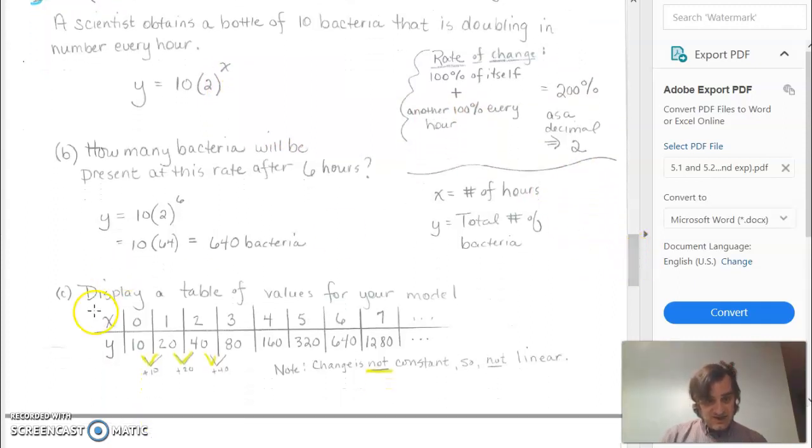But we also have a chart down here where when we start, we started with 10. After the first hour, it's doubled, so it went to 20. Then the next hour, we had 20, but it's doubled to 40. So we notice that this is a multiplier each time: times 2, times 2, times 2. And that's what makes it exponential and not linear.